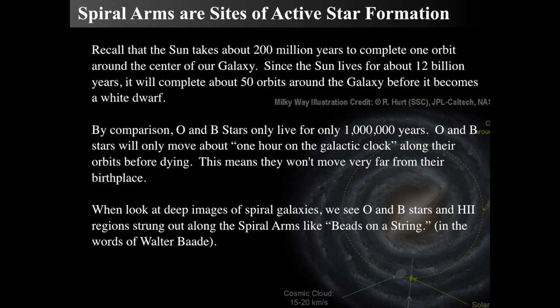We do know that spiral arms are the sites where massive star formation is occurring. The sun takes about a quarter, almost over 200 million years, about 260 million years to take an orbit. Therefore, it'll do a grand total of 50 orbits around the galaxy before it dies and becomes a white dwarf. O and B type stars only live about a million years, so a million to 10 million years. That means they move at most one hour on the galactic clock.